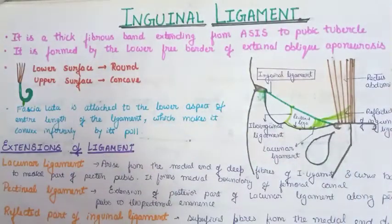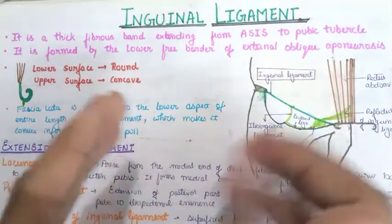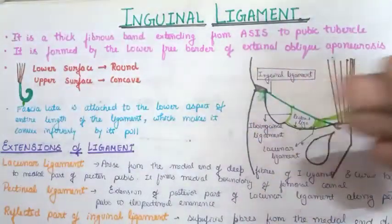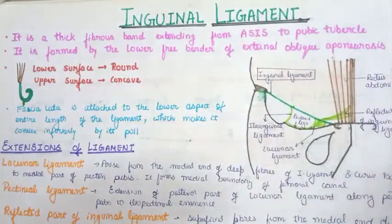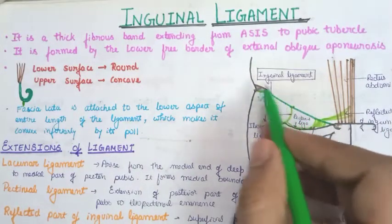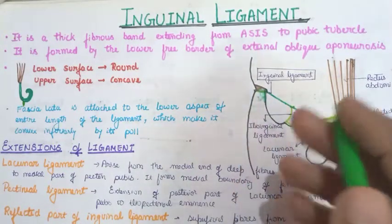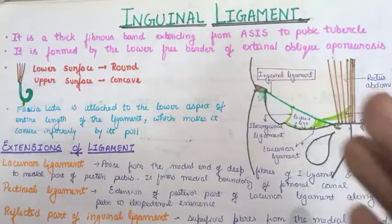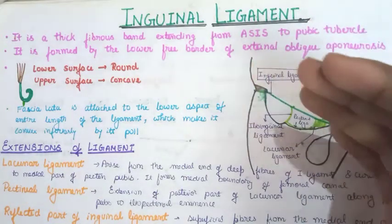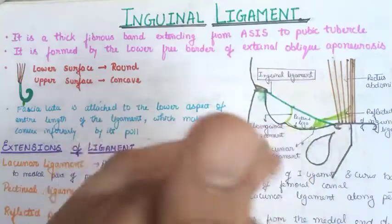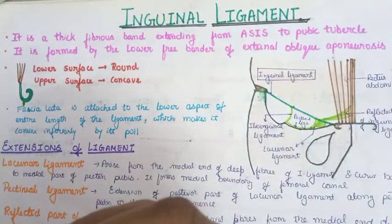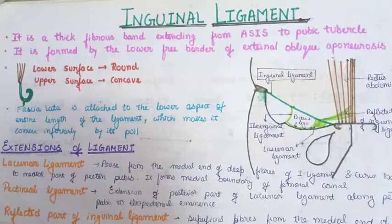You should also watch the next video on the continuation of the inguinal ligament, which covers the sub-inguinal space. The sub-inguinal space is the space present below the inguinal ligament, through which many important structures pass from the abdomen into the lower limb. It is also very important clinically.